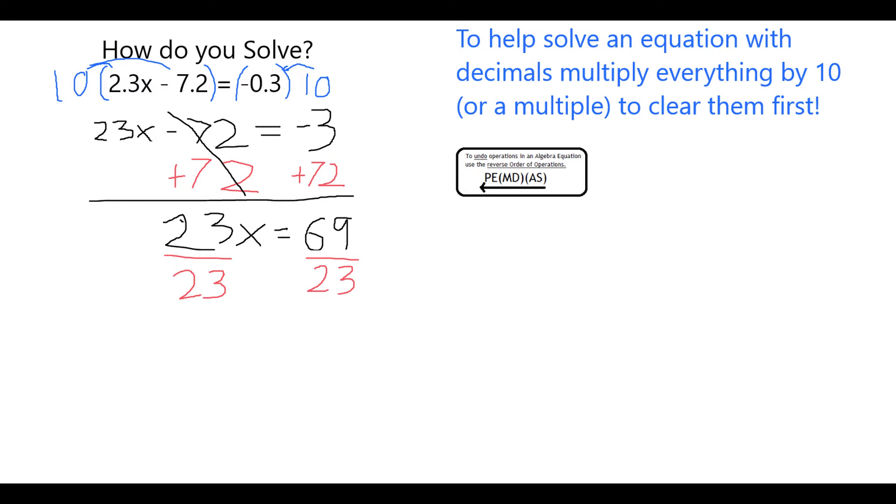Finally, to isolate x, I can divide both sides by 23. 23 over 23 is 1, or simply 1 times x. Therefore, x is equal to 69 divided by 23, which very nicely comes out to 3.